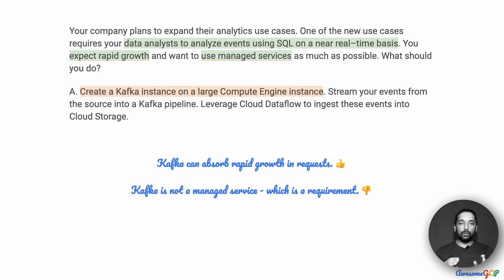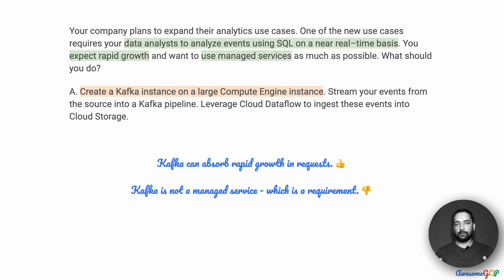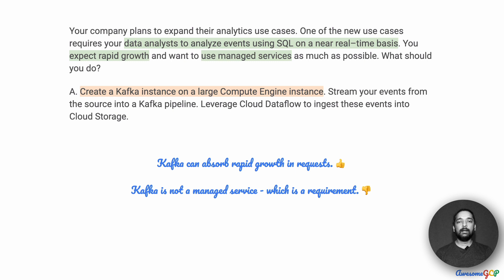Kafka is good at absorbing rapid growth, so that works very well for us. However, it is not a managed service, and that is almost a requirement in this case. If there were no other managed service options, then maybe Kafka is a good choice. But we do have a better choice in PubSub, which is a managed service. Therefore, we can eliminate Option A, within which Kafka is an option.